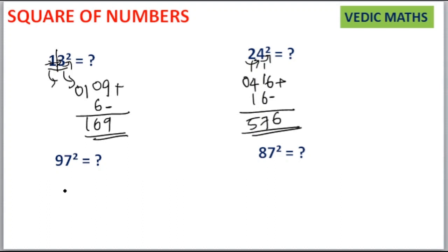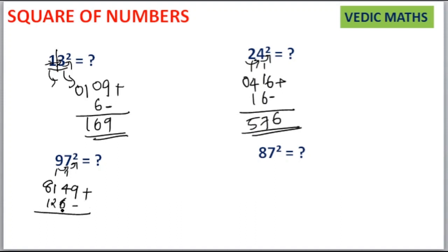Next is 97 squared. 7 squared is equal to 49. 9 squared is equal to 81. 9 into 7 is equal to 63, and 63 into 2 is equal to 126. Leave the unit place, then write 126 here. Then if you add together, you will get 9409 as your answer.